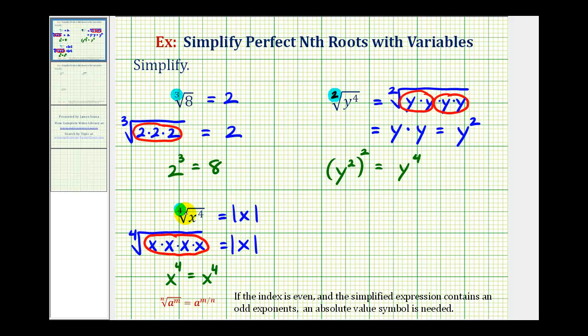The reason for this is, when the index is even, the number underneath the radical must be positive, and the result must also be positive as well. Notice if x was equal to, let's say, negative two, this would be positive 16, which is fine. But without the absolute values, we would be saying that this simplifies to negative two, which cannot be the case. So the absolute values takes care of the cases where x is less than zero.